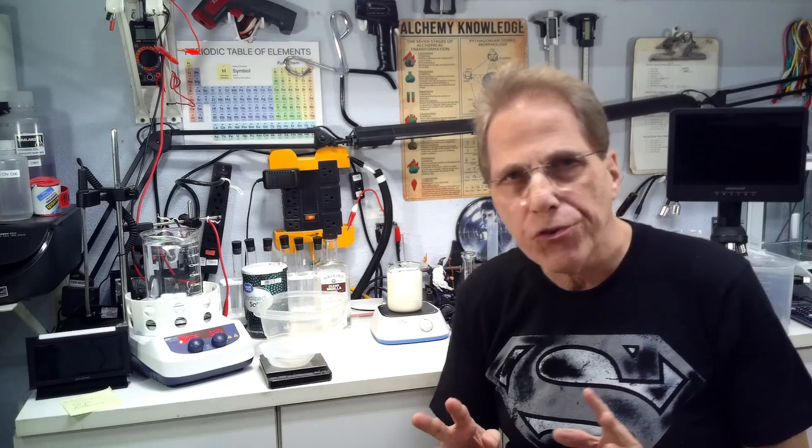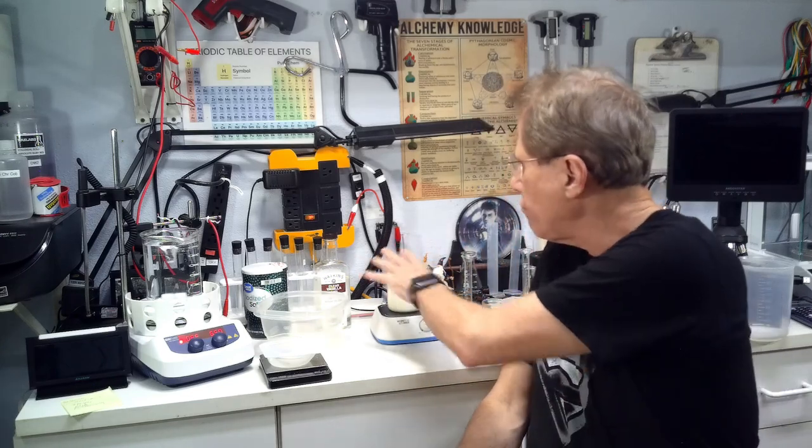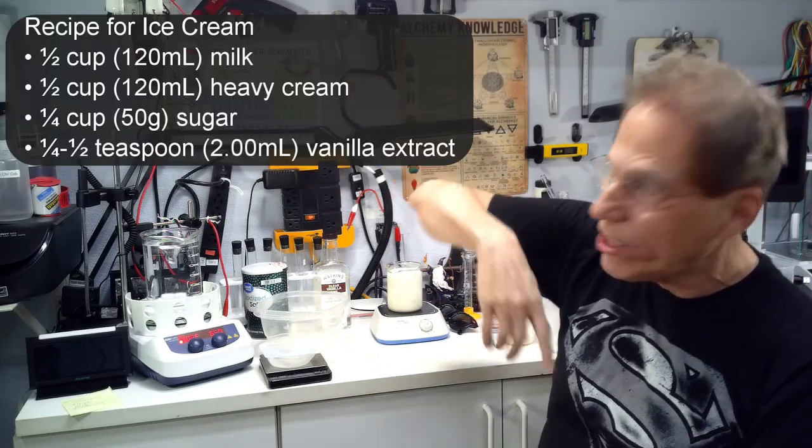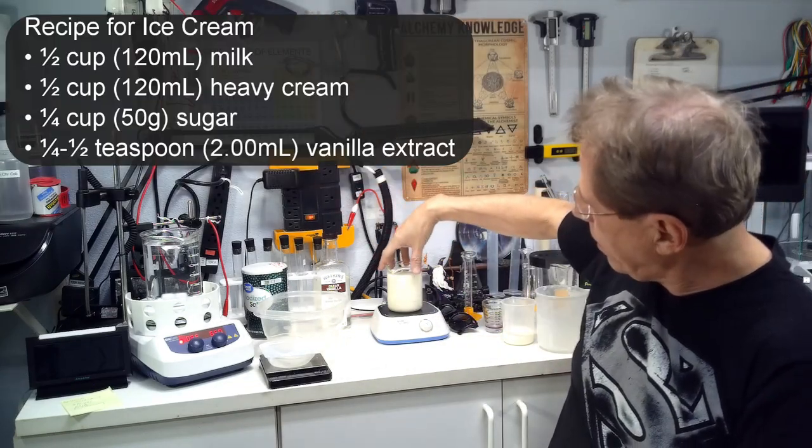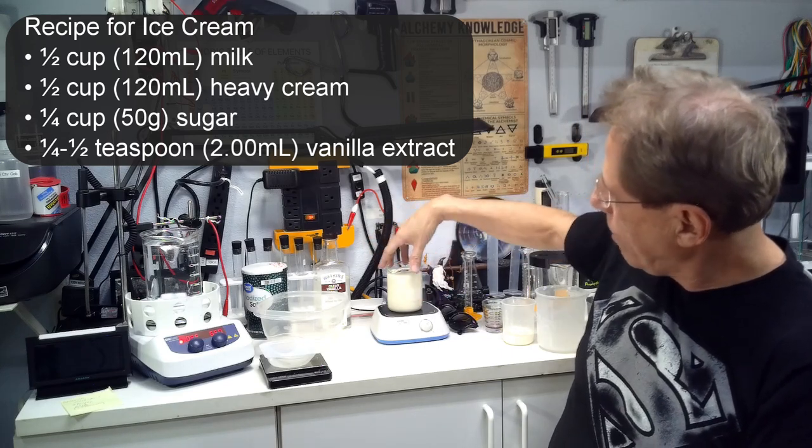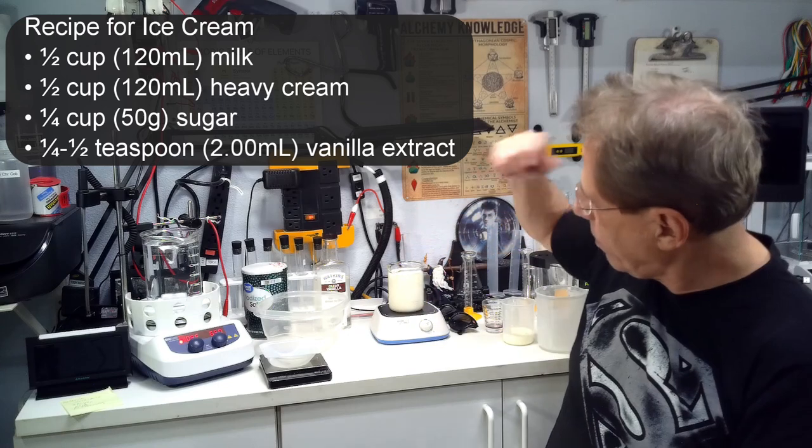Now, to make ice cream the Alchemist way, we're going to use something called freezing point depression. The actual ice cream mixture is here in my little beaker, my 250 ml beaker, mixing up right now on this stirrer.